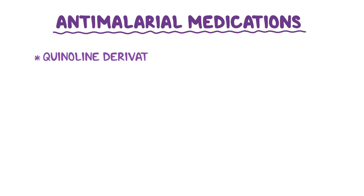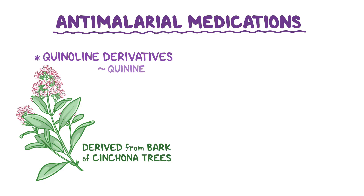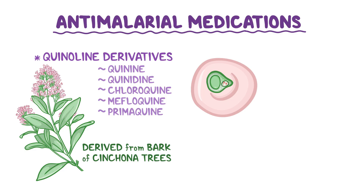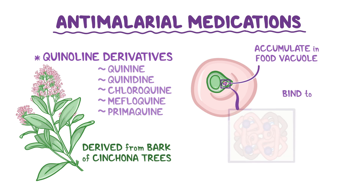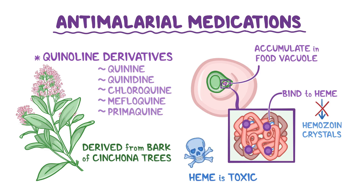Many of the antimalarial medications are quinoline derivatives like quinine, which is one of the earliest antimalarial medications derived from the bark of South American cinchona trees. Other medications in this class include quinidine, chloroquine, mefloquine, and primaquine. These medications work by entering the plasmodium and accumulating in their food vacuoles, where they bind to heme and prevent it from being converted into hemozoin. Since heme is toxic to the plasmodium, this eventually leads to their death.